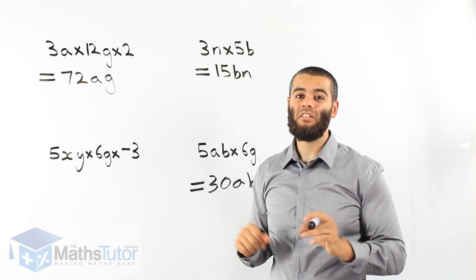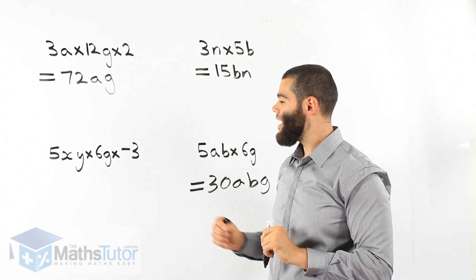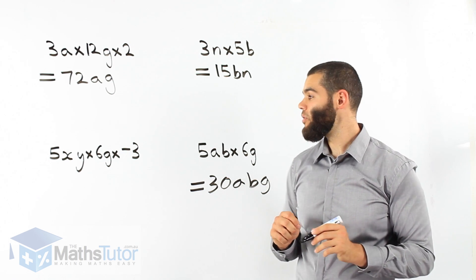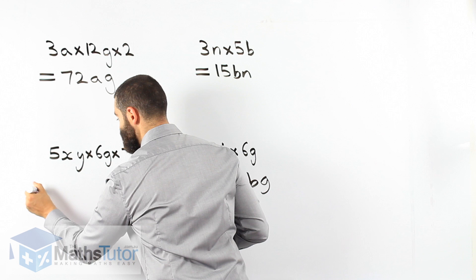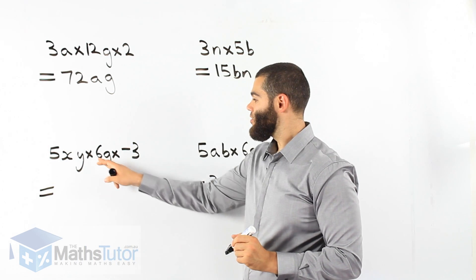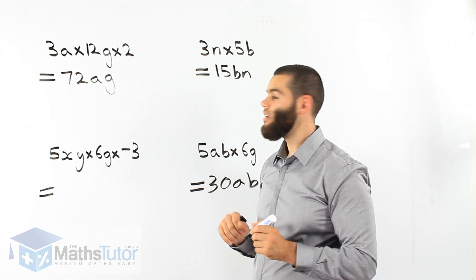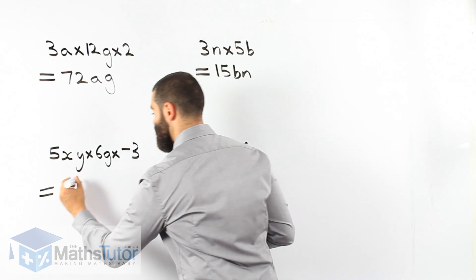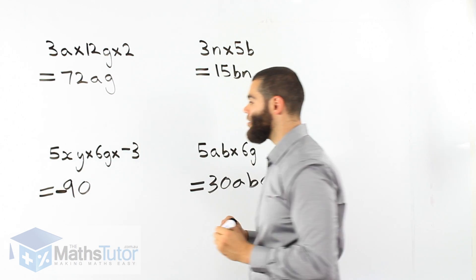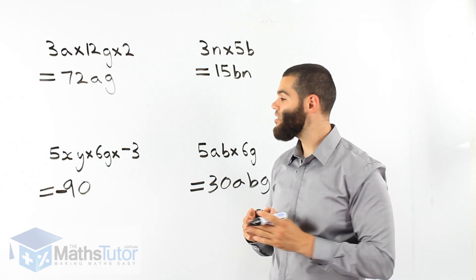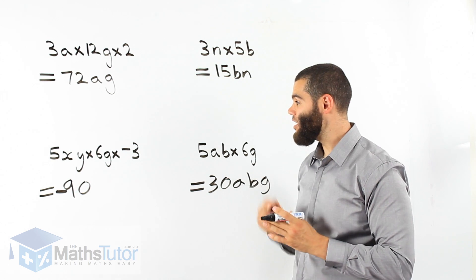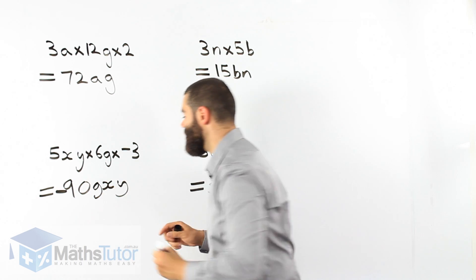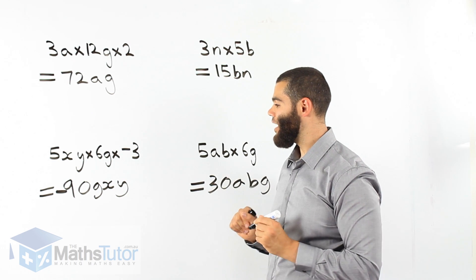Now we have 5xy times 6g times negative 3. We multiply the numbers: 5 times 6 is 30, then 30 times negative 3. We know 30 times 3 is 90, and we keep the negative, so 30 times negative 3 is negative 90. Don't forget the negative. We write the pronumerals as gxy — you can write the letters in any order as long as you write them all down.